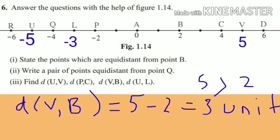Next, distance between point V and B. The coordinate of V is 5 and the coordinate of B is 2. Here 5 is greater than 2, so the distance between point V and B is 5 − 2 = 3 units.